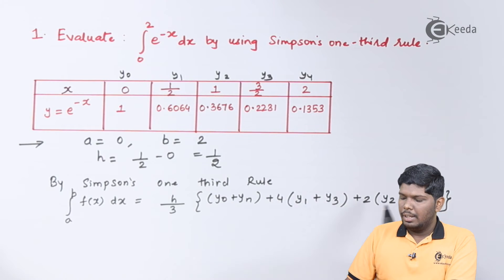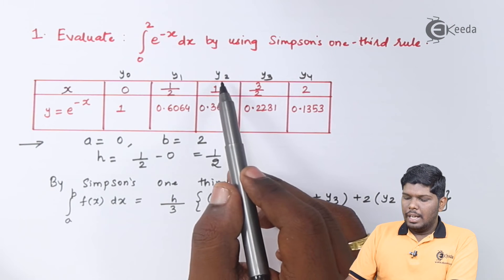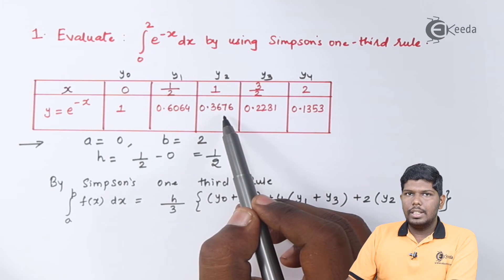So we have written y₁ plus y₃, plus twice we have odd positions. Now what are odd positions? If I say 1 is odd position, then next 0.3676 is odd position.